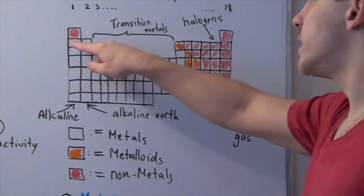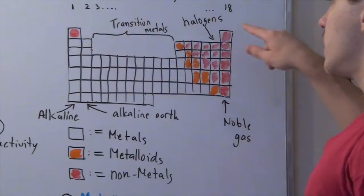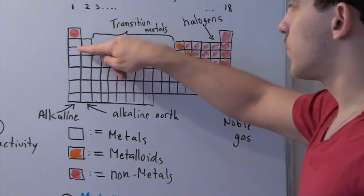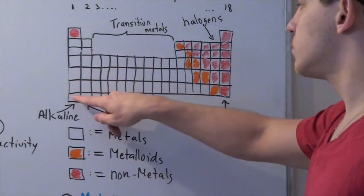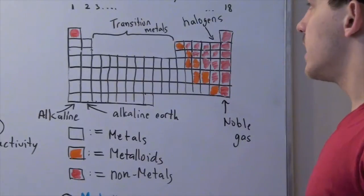While these rows are known as periods. So, period 1, period 2, period 3, 4, 5, 6, all the way up to period 7.